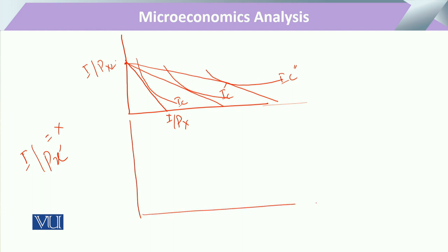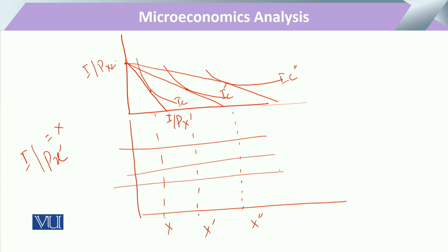Now, drawing this x amount, this second x amount, and this third x amount vertically downward — this is amount one, the second, and the third. In response there were three price levels: the highest, the second, and the third. Joining these price points gives the price consumption curve, and from this the demand curve can be easily drawn. In this way we calculate the amounts demanded in response to price changes.